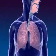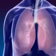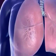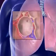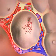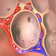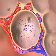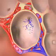Oxygenated air goes from the nose to the pharynx, larynx, trachea, bronchus, and alveoli. By the process of diffusion, oxygen in the air moves from the alveoli to the capillaries. Carbon dioxide moves from the capillaries to the alveoli and is exhaled.